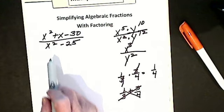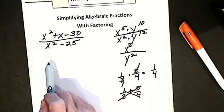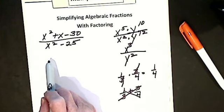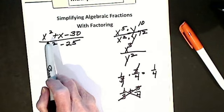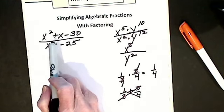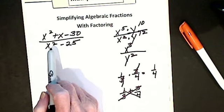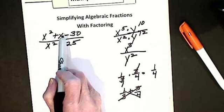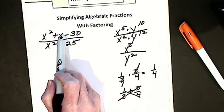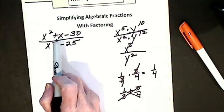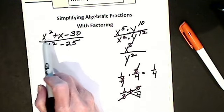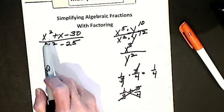I look at my numerator and do this self-talk, asking myself three questions: Is it an example of greatest common factor, difference of two squares, or a trinomial? Hopefully you see there's no greatest common factor — no number divides into each term except one. It can't be difference of two squares because that means two terms, and I have three terms. So I look to see if I can factor this trinomial. It has no coefficient in front, so it should be an easy one.